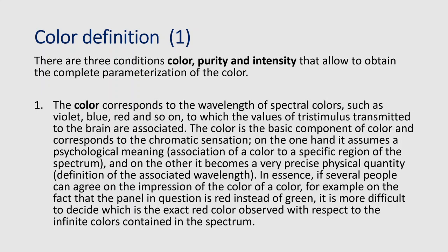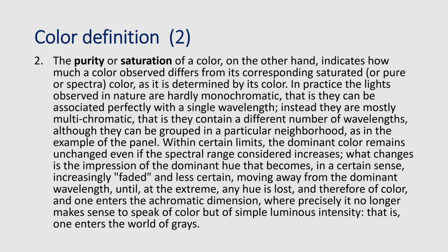The second parameter is called purity, or better, saturation of a color. Saturation indicates how much an observed color differs from its corresponding saturated, pure, or spectral color. In practice, lights observed in nature are hardly monochromatic — they cannot be perfectly associated with a single wavelength. Instead, they are mostly multichromatic, containing different numbers of wavelengths. Although grouped in a particular neighborhood, as in the example of the red panel, with certain limits the dominant color remains unchanged even as the spectral range considered increases.